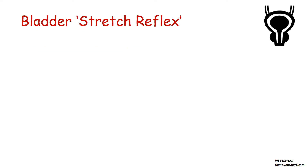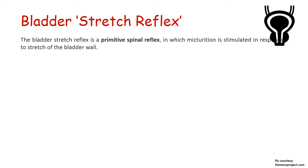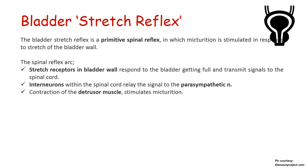Now we must know the bladder stretch reflex. It is a kind of primitive spinal reflex — primitive meaning it is present since intrauterine life. Micturition is stimulated in response to the stretch of the bladder. The stretch receptors in the bladder wall respond to the bladder getting full and transmit signals to the spinal cord. Interneurons within the spinal cord relay the signal to the parasympathetic nerve, causing bladder contraction and sphincter relaxation, and finally the contraction of the detrusor muscle stimulates micturition.